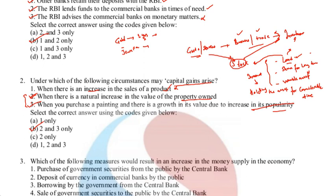The third question: which of the following measures would result in an increase in money supply in the economy? First: purchase of government securities from the public by the central bank — the moment the central bank purchases government securities from the public, the government gives cash back to the public, so this increases money supply. First option is correct.